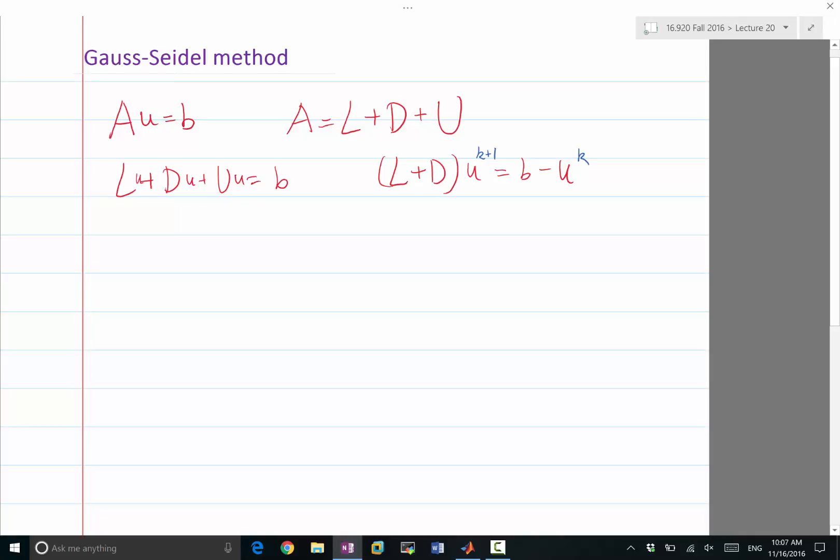The value of this splitting is that this iteration would be easy to perform. When we are talking about Jacobi iteration, it is easy to perform because the left-hand side involves inverting D only.